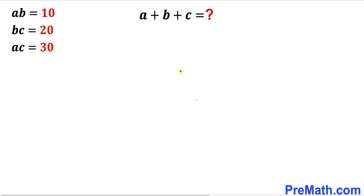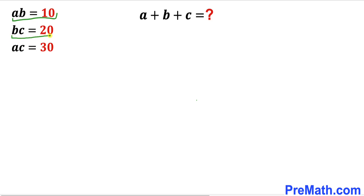Welcome to pre-math. In this video we have a system of three equations. Our equations are a times b equals 10, b times c equals 20, and finally a times c equals 30.